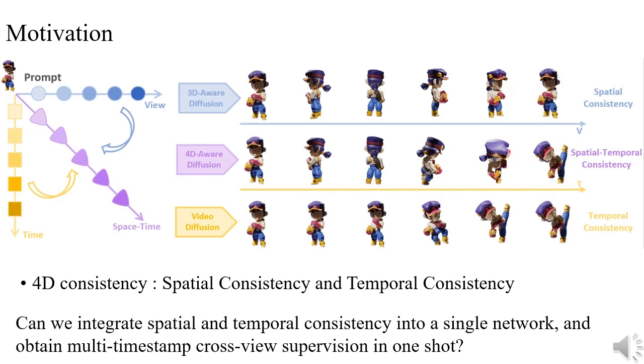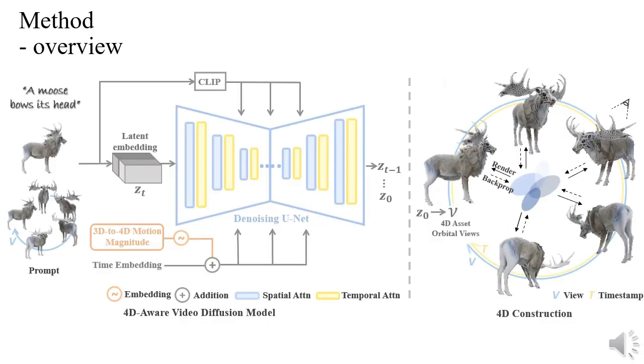Inspired by recent works in static 3D generation that repurposed temporal consistency in video generation to spatial consistency in 3D generation, we design a strategy to achieve spatial-temporal 4D consistency with a singular 4D-aware video diffusion model. To this end, we propose a novel framework, Diffusion 4D.